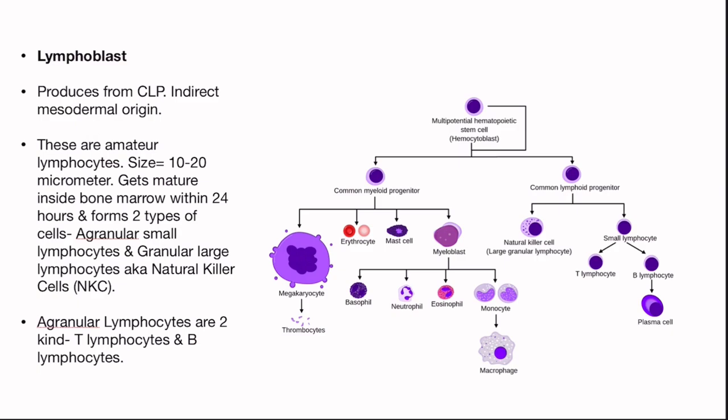They get mature inside the bone marrow within 24 hours and form two types of cells: agranular small lymphocytes and granular large lymphocytes, which are also known as natural killer (NK) cells. These agranular lymphocytes are again of two kinds: T lymphocytes and B lymphocytes, which we will talk about later.